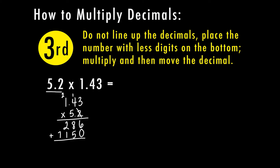Now I'm going to add these up: 6, 13, 4, and 7. Once I've done that, I can go back to my original problem and count: 1, 2 places after the decimal in the first row, and 1 place after the decimal in the second row. 2 plus 1 is 3, so I'm going to move my decimal 3 places total — starting at the very end and moving 1, 2, 3 places. So my answer is 7 and 436 thousandths.